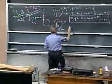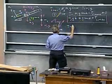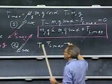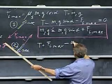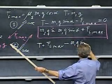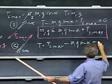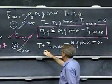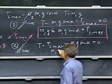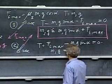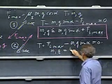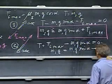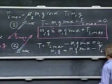So now we get T plus Ff max minus m1g sine alpha equals zero. We know that this is m2g. So m2g equals m1g sine alpha minus Ff max.